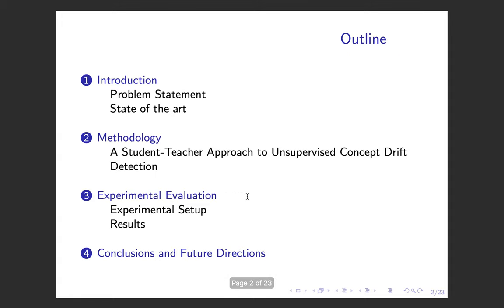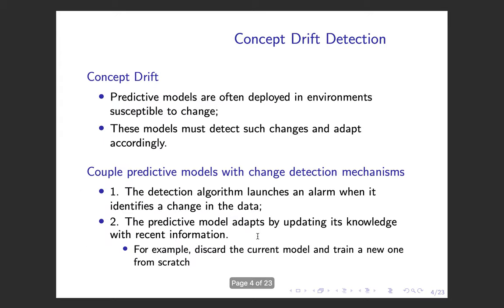In this presentation I'll start by introducing the problem, then I'll go over our methodology for unsupervised concept drift detection, show some experiments, and conclude. This work is about concept drift detection. Concept drift denotes the process in which the distribution of the data changes over time in unforeseen ways. In these scenarios, predictive models must be able to detect these changes and adapt to them.